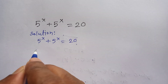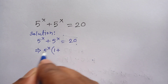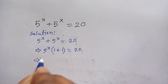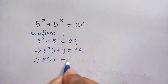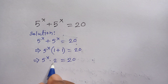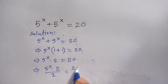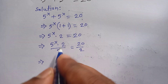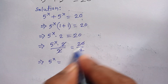So we can take common factor 5 to the 4X. This divided by this is 1, plus this divided by this is 1, is equal to 20. So 5 to the 4X times (1 plus 1), which is 2, is equal to 20. Now we divide both sides by 2, and the 2s cancel, so we get 5 to the 4X is equal to 10.